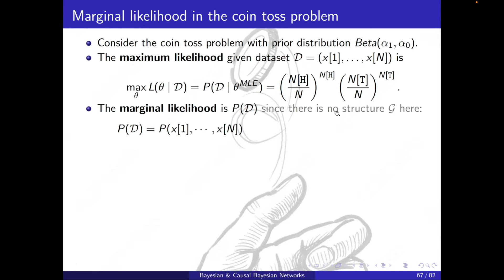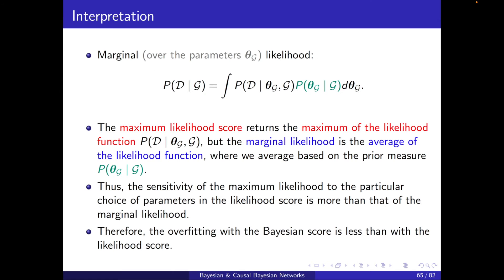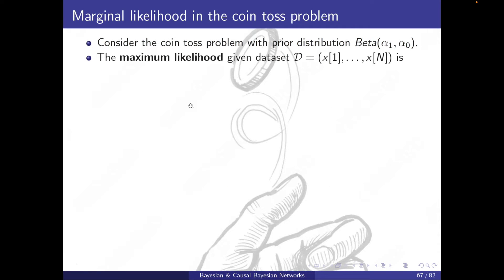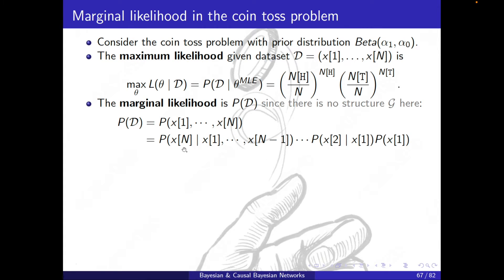For the marginal likelihood, since there is no structure G in the coin toss problem, it will simply be p of D — the probability of all instances. Using the chain rule, I can write this as p(xn | previous) times p(xn-1 | previous), all the way down to p(x1).